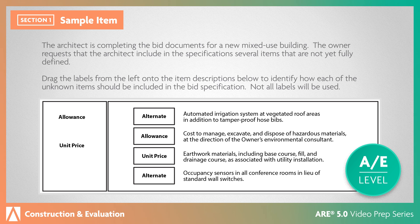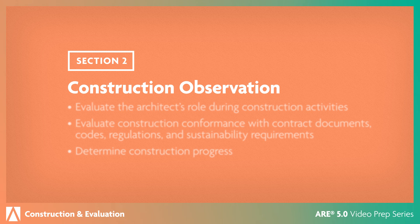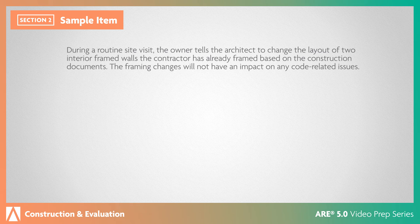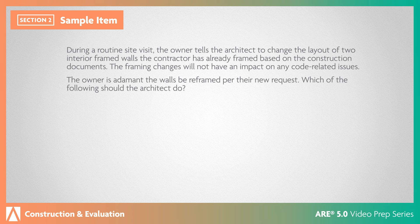The construction observation section addresses visiting the job site throughout the course of construction and the architect's roles and responsibilities. Let's look at a sample question. During a routine site visit, the owner tells the architect to change the layout of two interior framed walls the contractor has already framed based on the construction documents. The framing changes will not have an impact on any code-related issues. The owner is adamant the walls be reframed per their new request. Which of the following should the architect do?